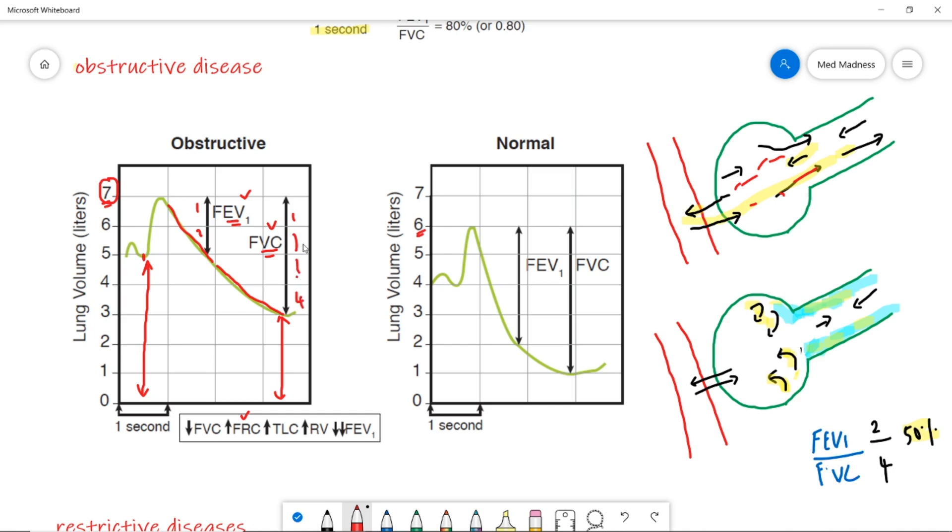So, 2 divided by 4 is 50%. In order to make this point more clear because this is the most important point you need to remember obstructive versus restrictive disease. The FEV1 is decreased. Yes, you know and FVC is also decreased, you know and you need to compare FEV1 and FVC and say which is decreased a lot. Either FEV1 or FVC. Here in the obstructive pattern, FEV1 is decreased a lot making the ratio less than 80%.